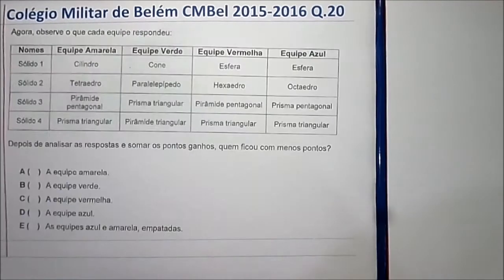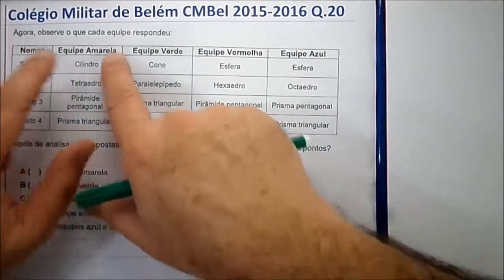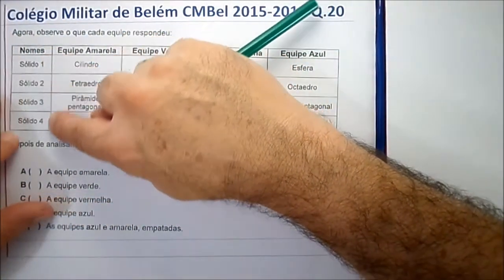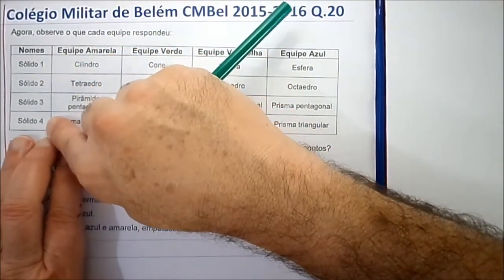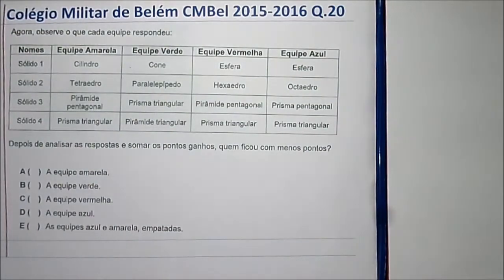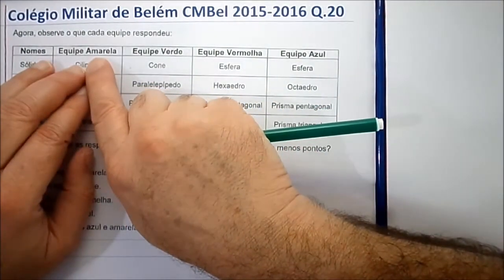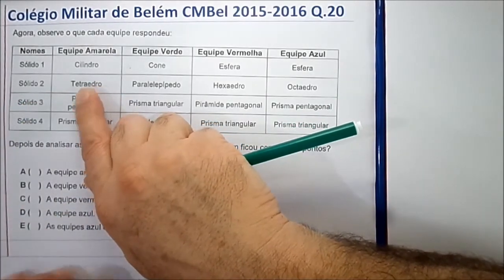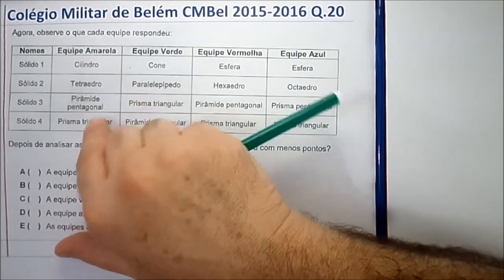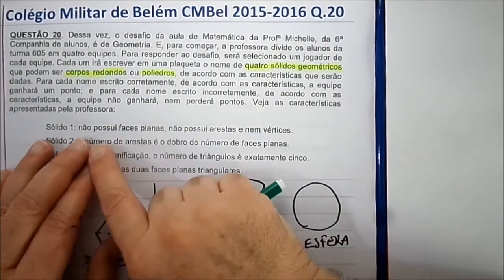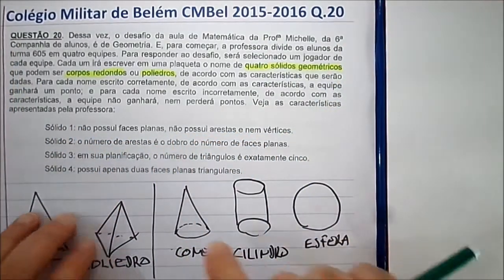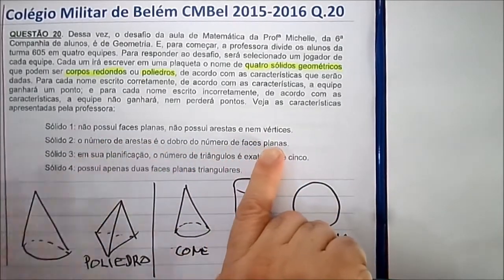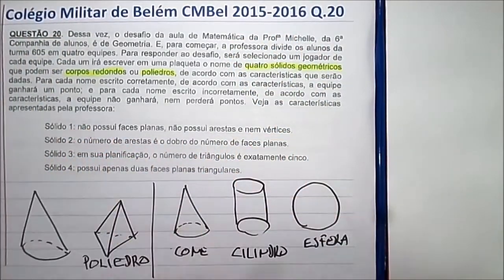Vamos ver o que o problema quer. O problema colocou uma tabelinha com quatro equipes: equipe amarela, equipe verde, equipe vermelha e equipe azul. A professora colocou quatro sólidos para os alunos identificarem. O sólido 1 é descrito assim: não possui faces planas, não possui arestas nem vértices. O participante tinha que dizer que sólido tem essas características.